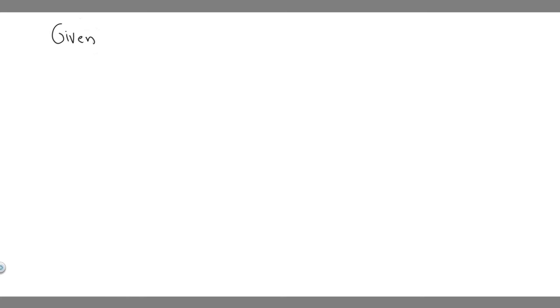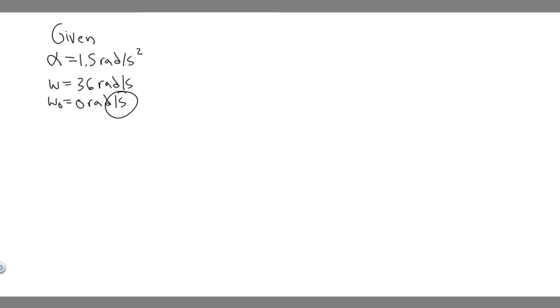Before we solve this problem, let's write down what we're given. We know the blade has a constant angular acceleration, so alpha equals 1.5 radians per second squared. For Part A, we're trying to find the time to reach an angular velocity of 36 radians per second — that's omega final. They also tell us it starts from rest, so the initial angular velocity, omega 0, is 0 radians per second. So time is what we're trying to find.